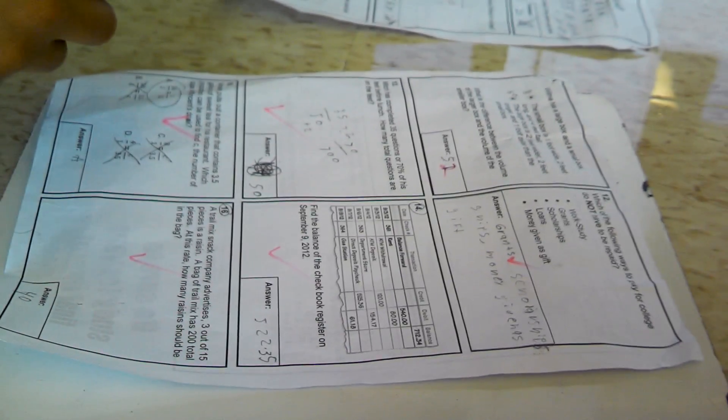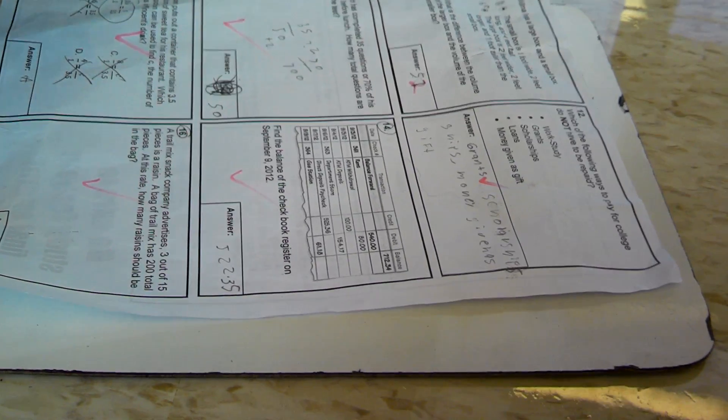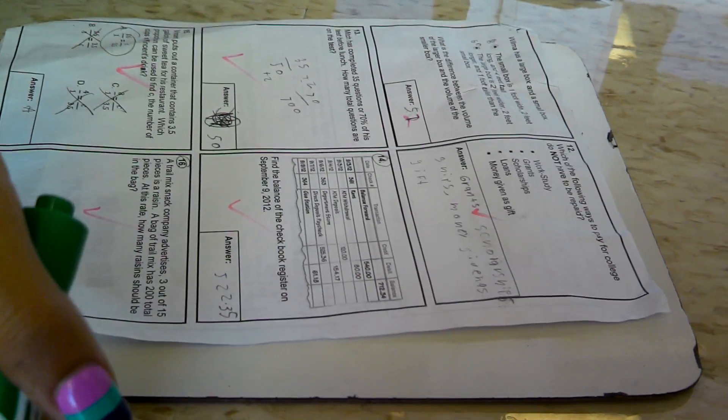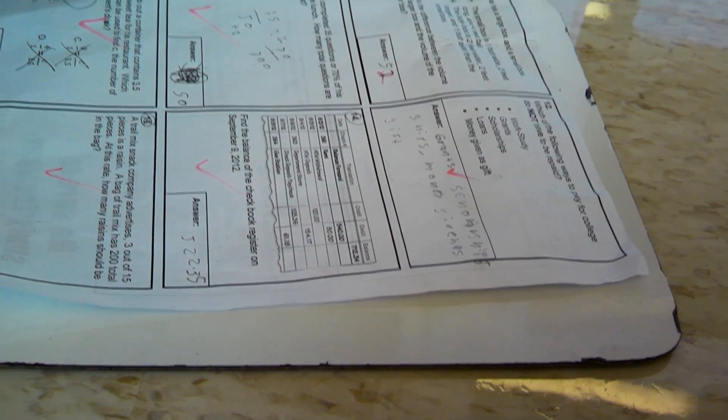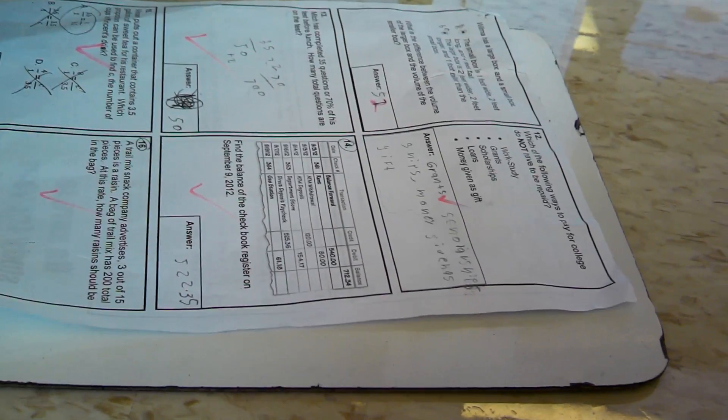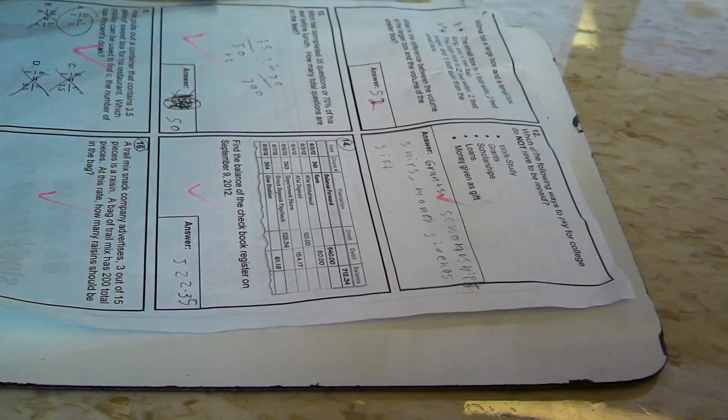Question 12. Which of the following ways to pay for college you don't have to repay? The first one is grants. The second one is a scholarship. The second one is money given as gifts, because the work I'm studying now.